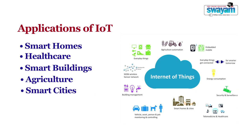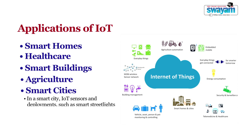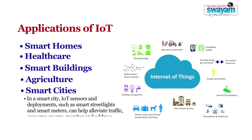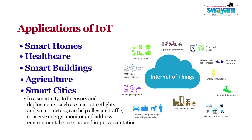In a smart city, IoT sensors and deployments such as smart streetlights and smart meters can help alleviate traffic, conserve energy, monitor and address environmental concerns, and improve sanitation.